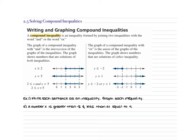Section 2.5 covers solving compound inequalities. Compound inequalities are literally two inequalities brought into one. These are either AND or OR inequalities. An AND inequality has a line that connects on the number line, while OR inequalities have two numbers that go opposite ways from each other on the number line.